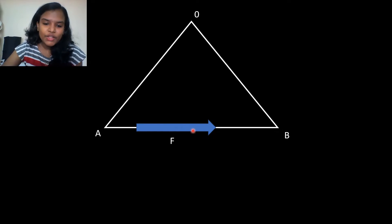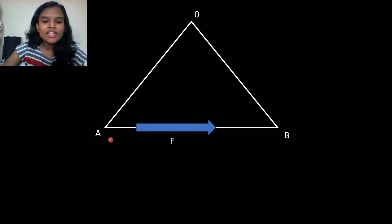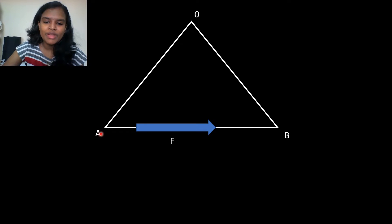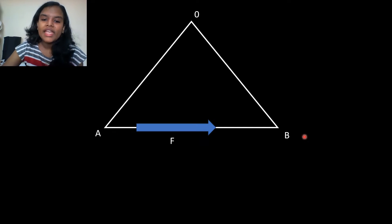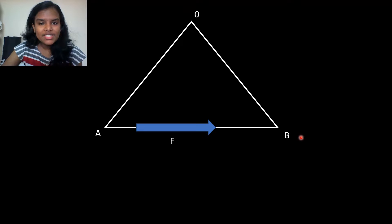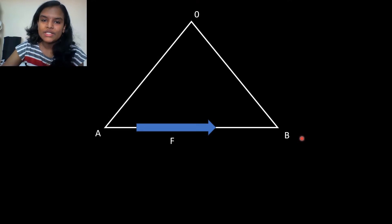In this figure, F is the force. The line of action is the force. We can find the moment. The moment is the force multiplied by the perpendicular distance.